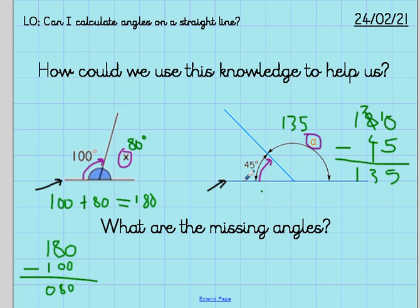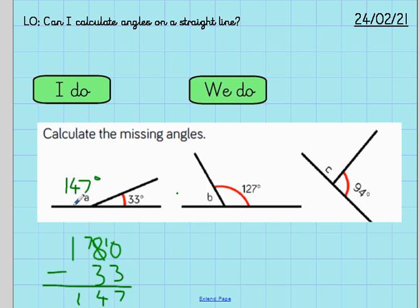Same over here. We had 180, we subtracted 45, and we got 135 for our missing angle. So, we're looking at all of these different angles.